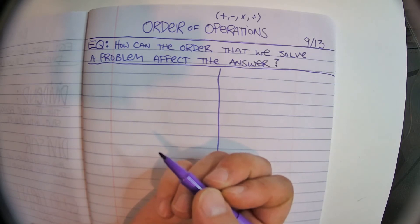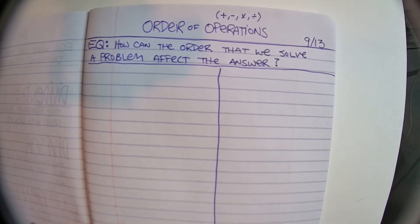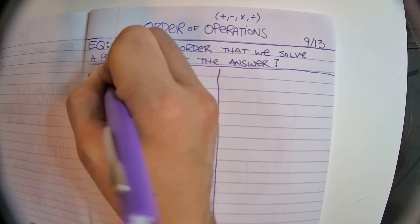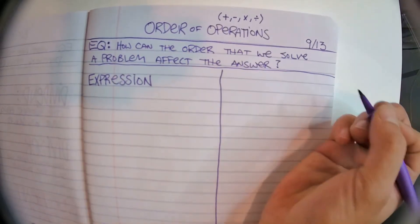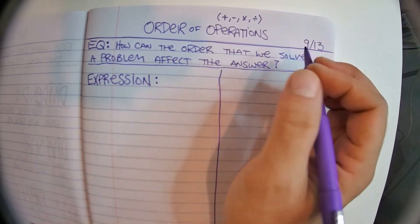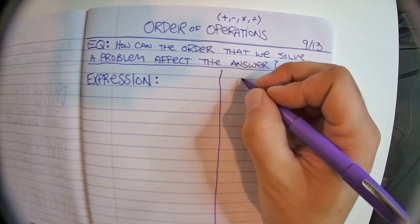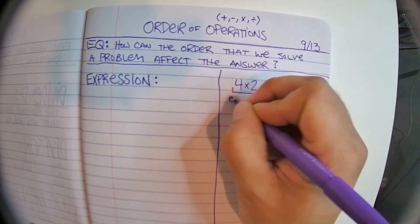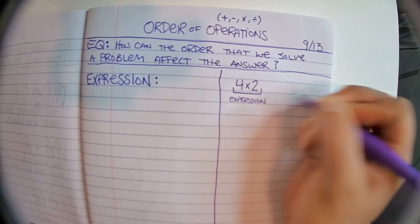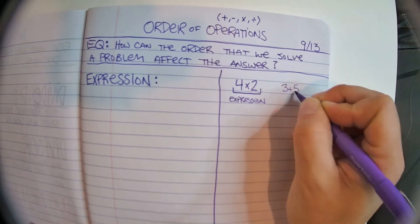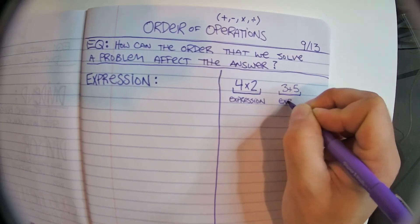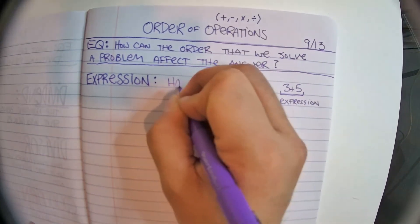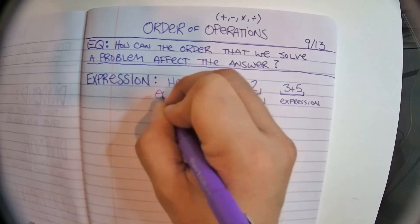First off, let's talk about what you might see when trying to do the order of operations. The first thing you might see is called an expression. You've seen these many times. An expression is basically a math problem with no equal sign. 4 times 2 is an expression. 3 plus 5 is also an expression. So an expression has no equal sign.